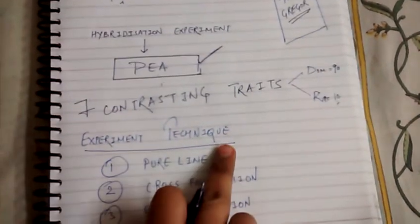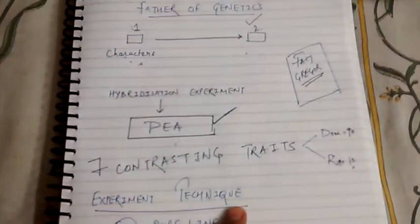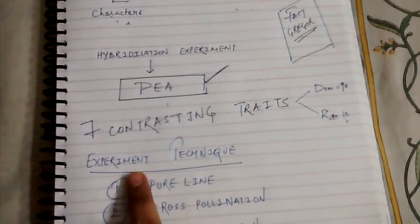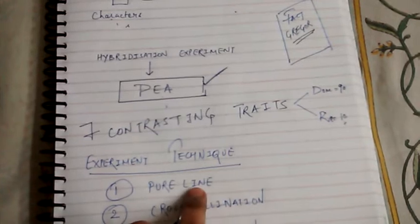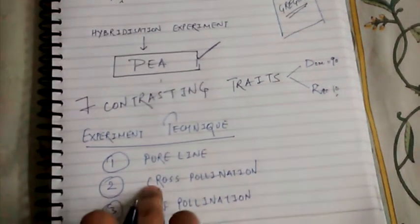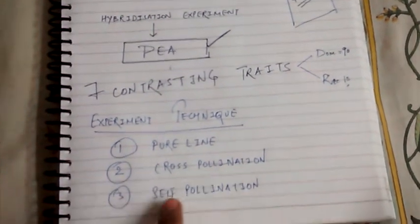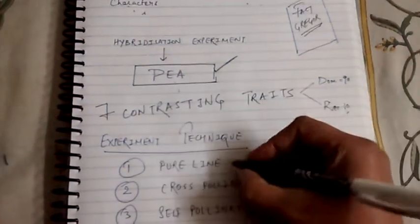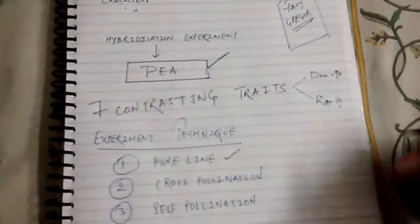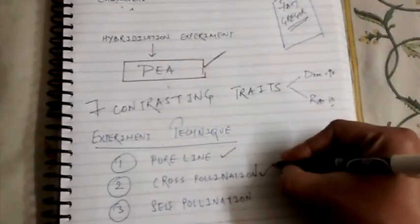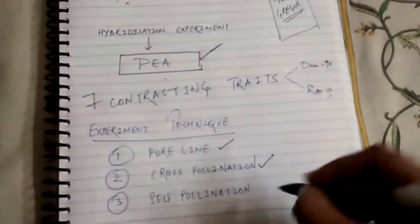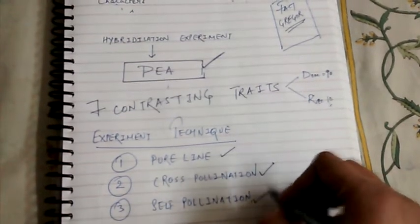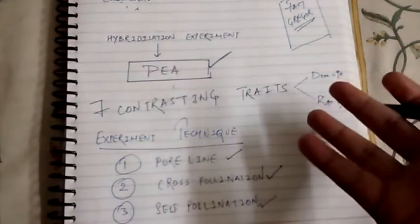What was the experiment technique of Grigore Johan Mendel? What he did was he first took pure lines, then he cross-pollinated them, and then he self-pollinated them. Why he took pure lines and what a pure line is, why he cross-pollinated them, what the result was, and why he self-pollinated them — everything we will come to know in the next video.